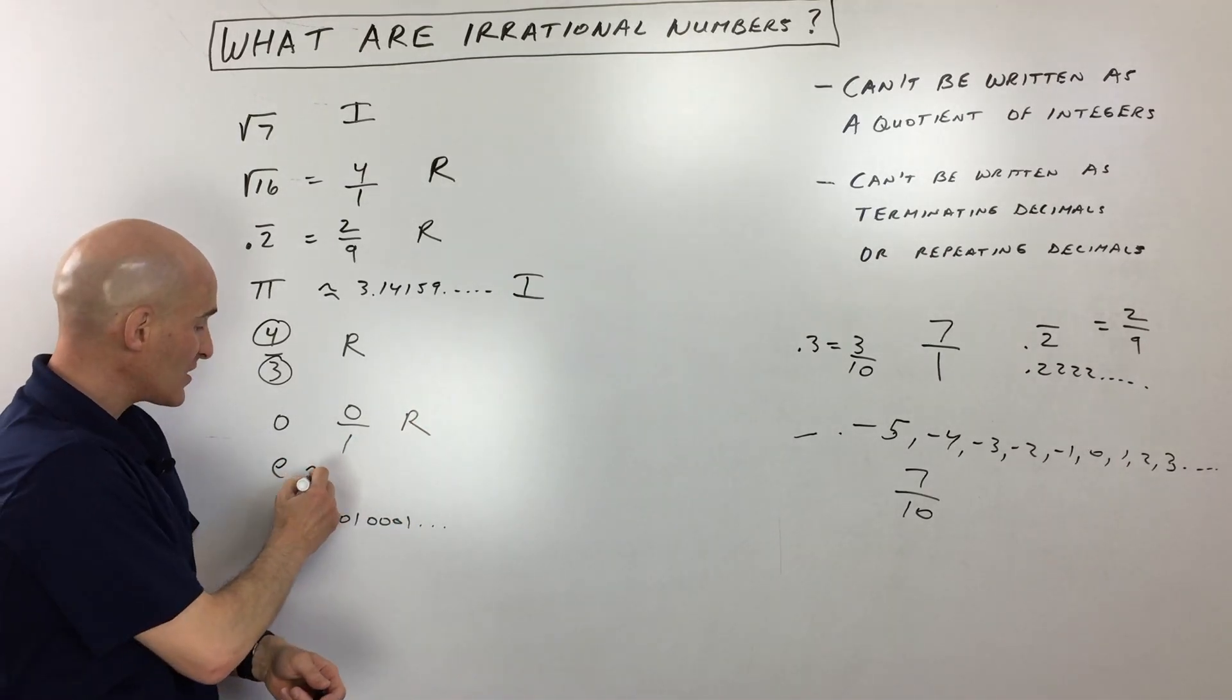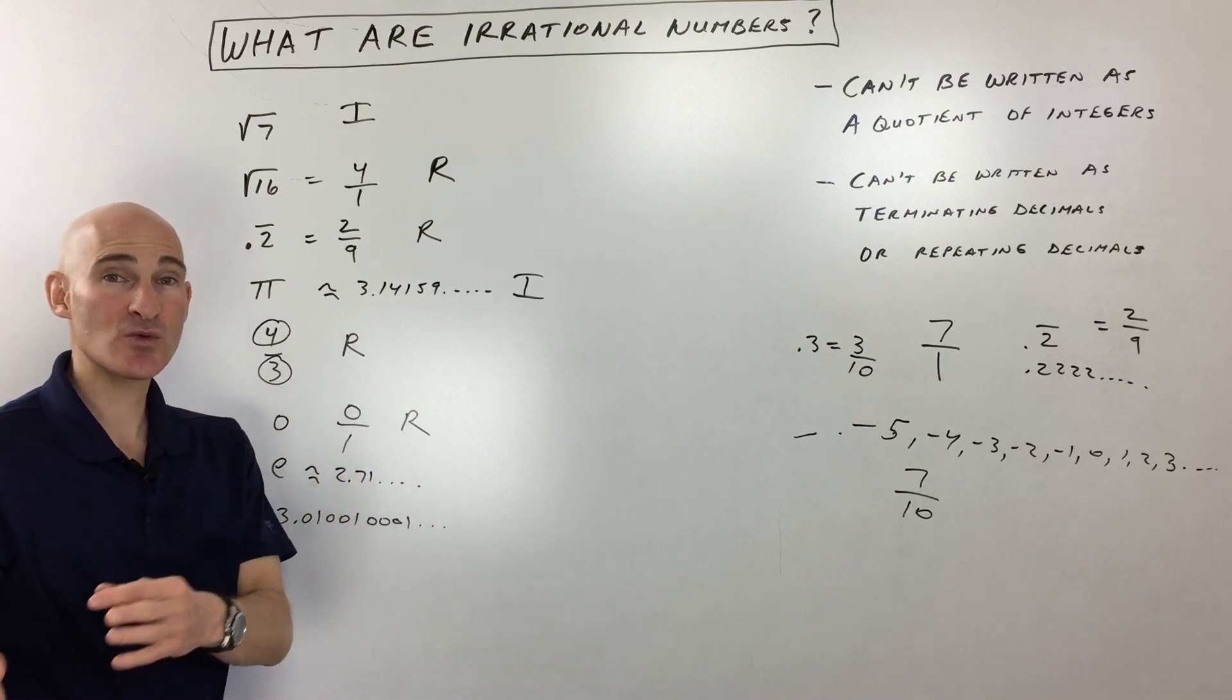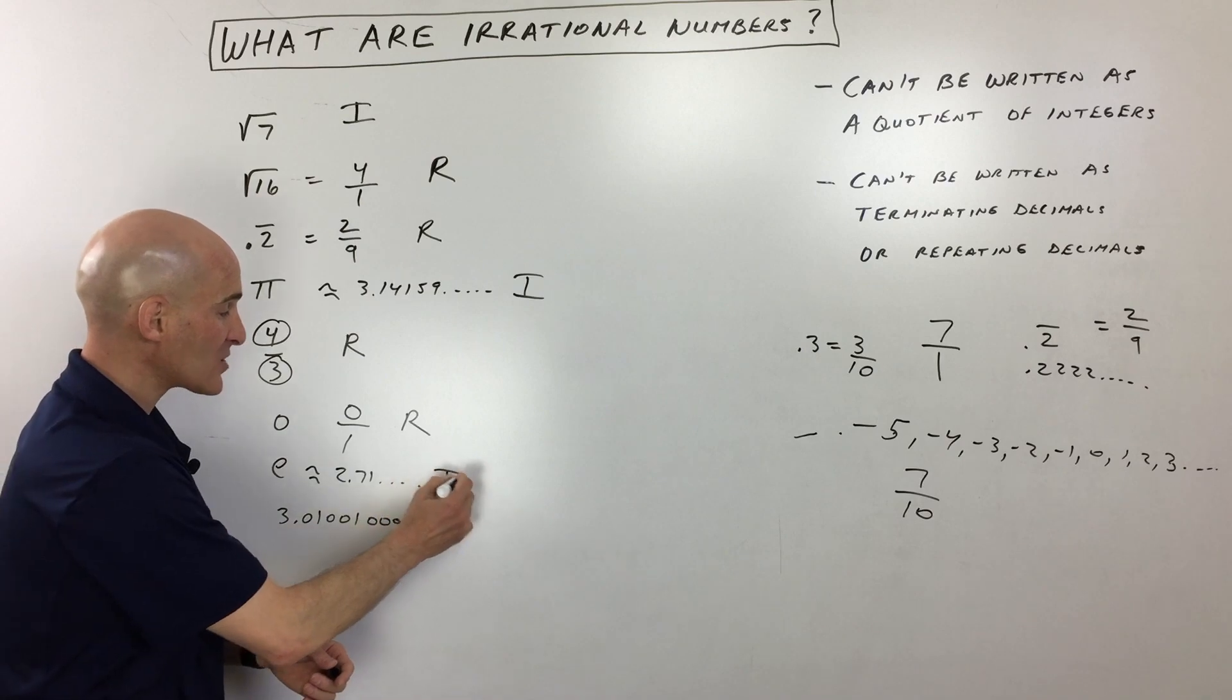E is approximately, it's a number like pi, where it's 2.71 dot dot dot. It doesn't repeat, it doesn't terminate, so that's considered an irrational number.